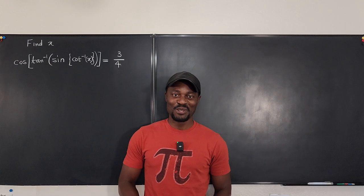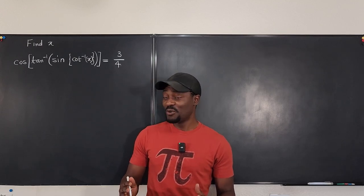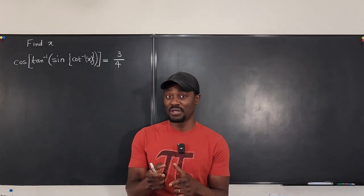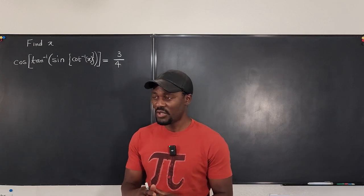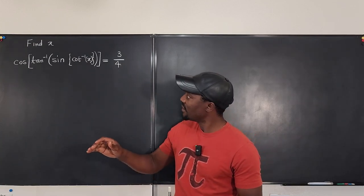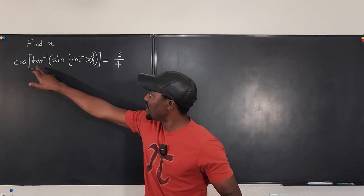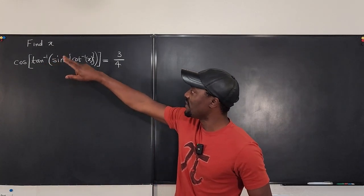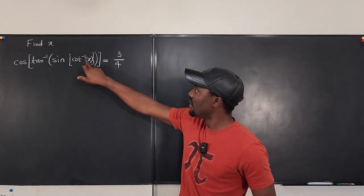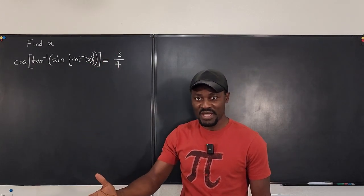Hello, welcome to another video. This is an equation — actually a trig equation that we're going to try to solve. You have this complicated composition: the cosine of the arc tangent of the sine of the arc cotangent of x is 3 over 4. What is x?